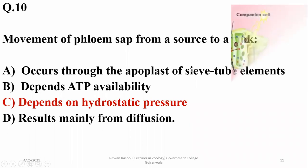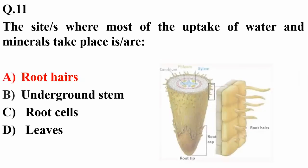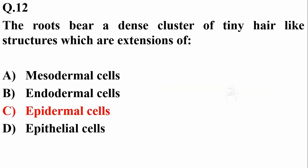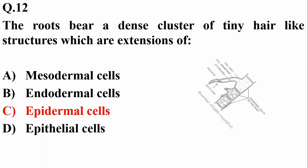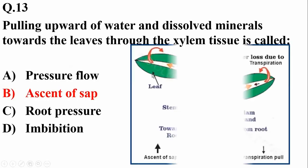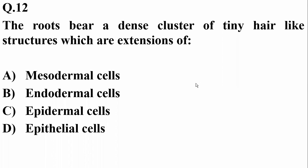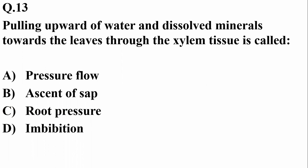Question eleven: the site where most uptake of water and minerals takes place is the root hairs, which are responsible for about 67 percent of the surface area provided to the plant for absorption. Root hairs are a dense cluster of tiny hair-like structures which are extensions of epidermal cells, so epidermal cells are the answer.